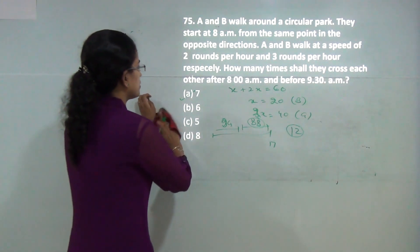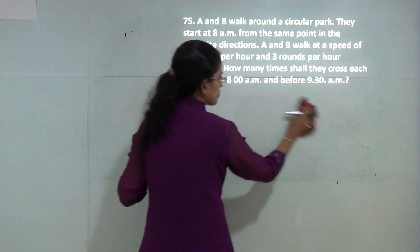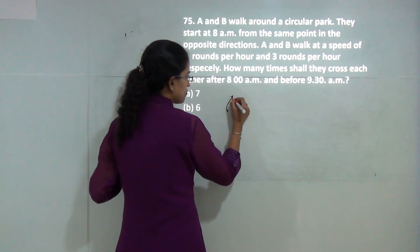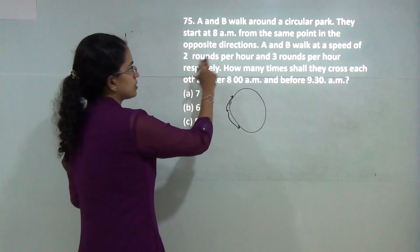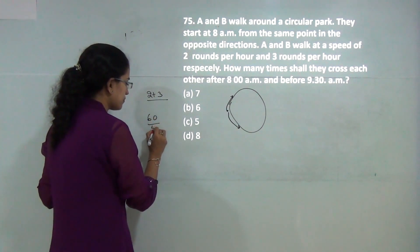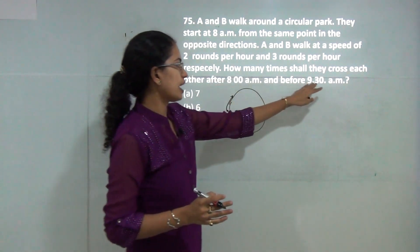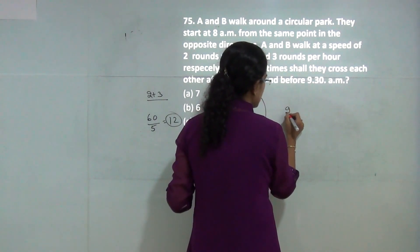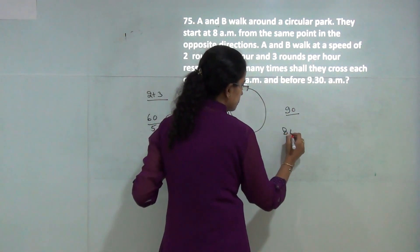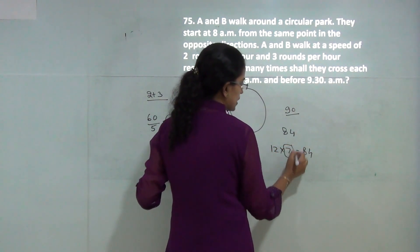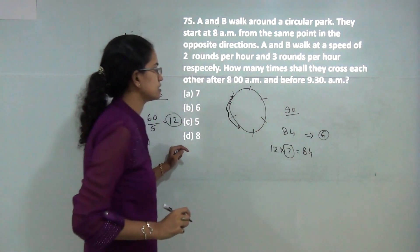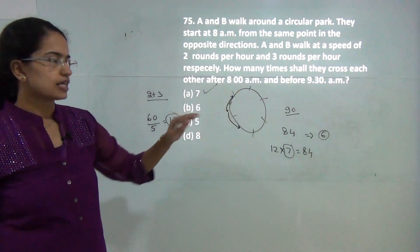This is another combined rate problem. A and B walk in opposite directions on a circle. Their combined rate is 5 rounds per hour, so 5 rounds in 60 minutes means they meet every 12 minutes. The total time is 1 hour 30 minutes or 90 minutes. They meet at 12, 24, 36 up to 84 minutes, which is 7 times, with 6 minutes remaining where they'd be on opposite sides.